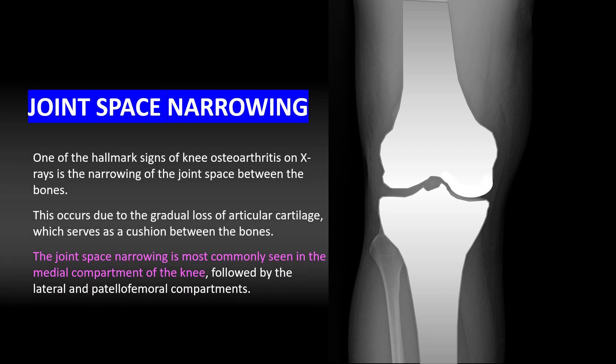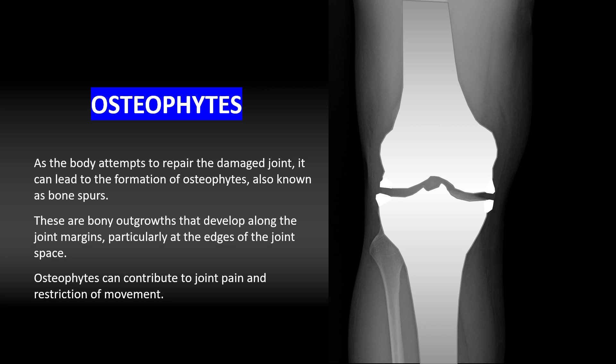Starting with joint space narrowing — one of the hallmark signs of knee osteoarthritis on x-rays is the narrowing of the joint space between the bones. This occurs due to the gradual loss of articular cartilage, which serves as the cushion between the bones. Joint space narrowing is most commonly observed in the medial or inner compartment of the knee, followed by the lateral or outer and patellofemoral compartments.